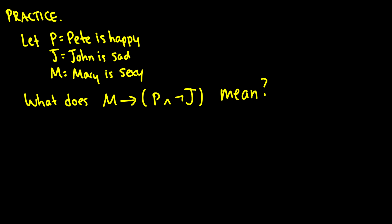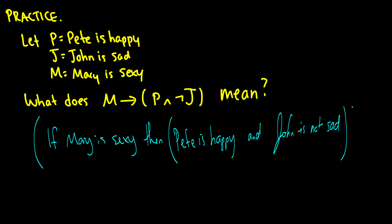Really, what you should be doing is putting brackets around everything, much like you would for multiplication, addition, that kind of stuff to make sure nothing is ambiguous. So really, this is what you should be doing. But what does this mean? Okay, this means if Mary is sexy, I'm going to put a bracket around things I'm talking about. Then, okay, P, Pete is happy. And, and then we have John is not sad, because we have not J. So if J is John is sad, then not J is John is not sad. And this is our sentence. If Mary is sexy, then Peter is happy, and John is not sad.